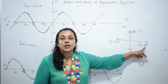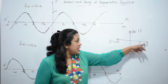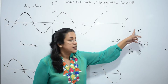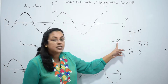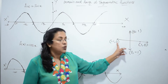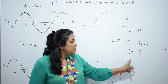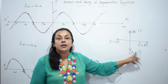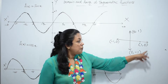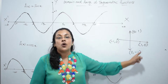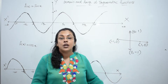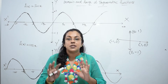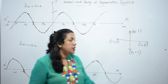Sin 0 is 0, sin 90 is 1, sin 180 is again 0, sin 270 is minus 1, sin 2π is 0 and so on. If we draw the graph of this sin function, we can see its shape.